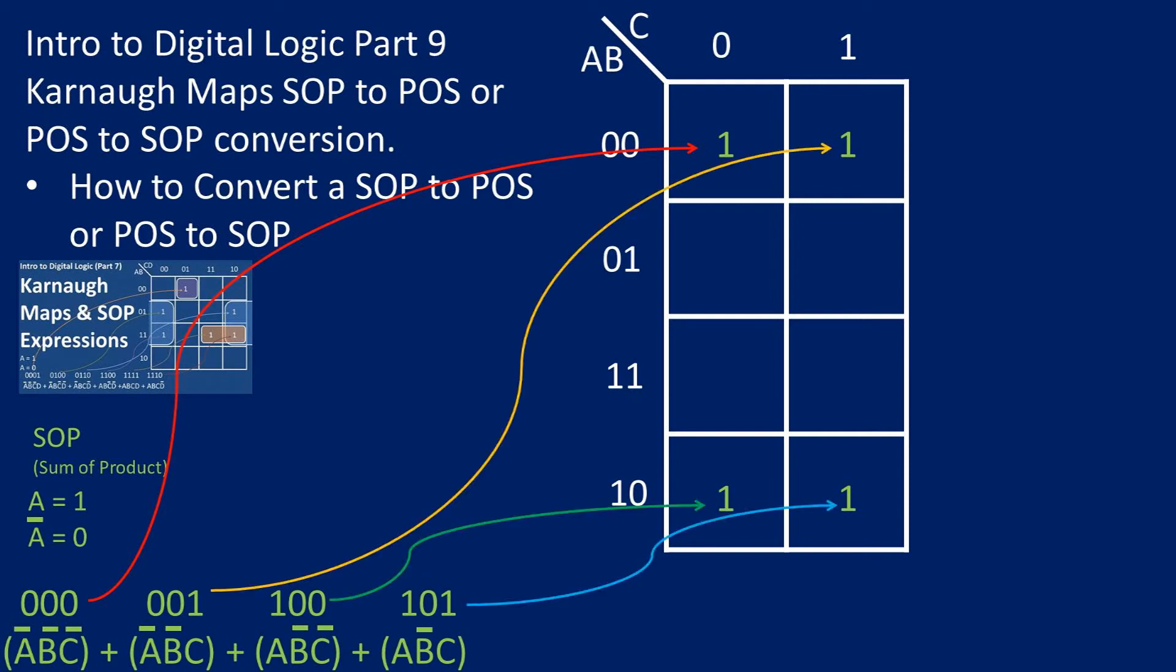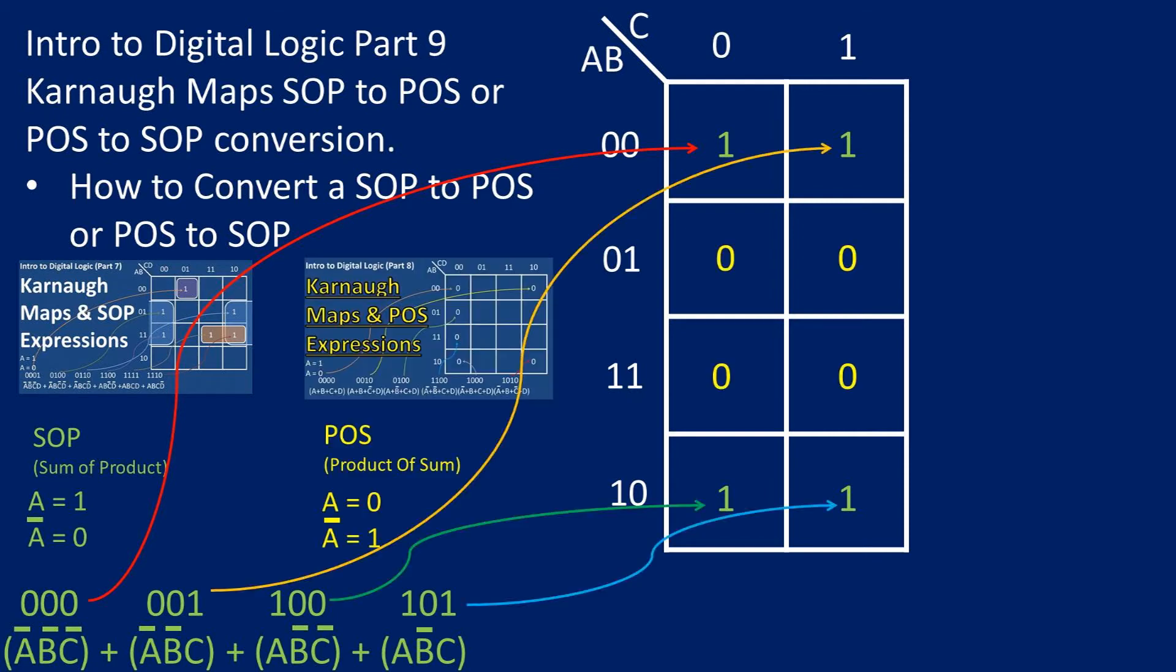Completing this for the rest of the values, we get the displayed Karnaugh map. Now to get the equivalent product of sums expression, we can place zeros in all open cells in the Karnaugh map that we just found.